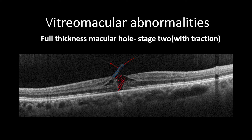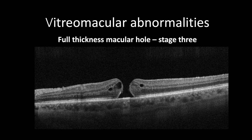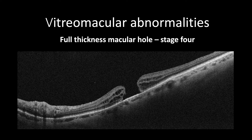Full thickness macular hole stage 2 can be presented with variable sizes and can be associated with intraretinal cysts. Stage 3 is presented with a full thickness defect with a completely detached operculum and foveocortical vitreous, but the vitreous is still attached at the optic disc. The hole can be variable sizes with elevated hole edges and cystic formation. Stage 4 features a full thickness defect with a completely detached operculum and foveocortical vitreous, with the vitreous also detached at the optic disc — a full posterior vitreous detachment — and usually variable hole sizes with elevated edges and cystic formation.